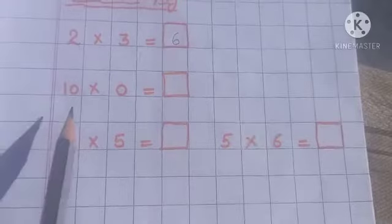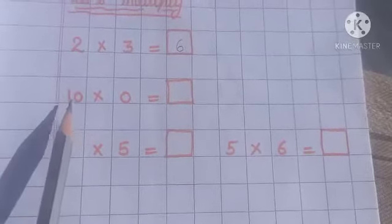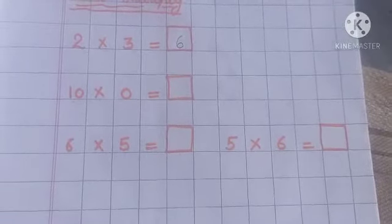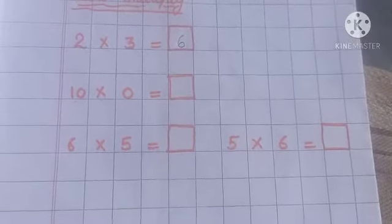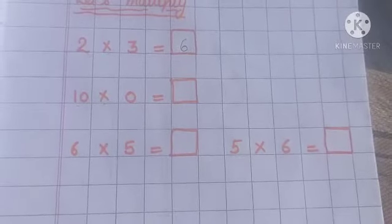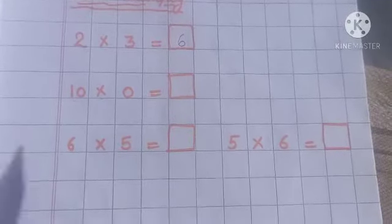The next example we have is ten into zero. We know that any number times zero is equal to zero.